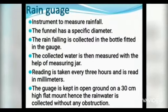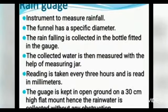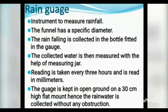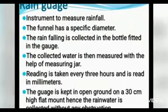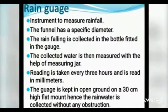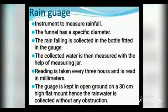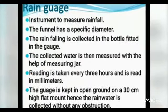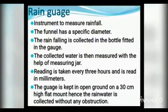In areas of heavy rainfall, the reading of the rain is taken every 3 hours. The measuring jar reads in millimeters. The gauge is kept in open ground on a 30 centimeter high flat mount, so that the rainwater is collected without any obstruction.